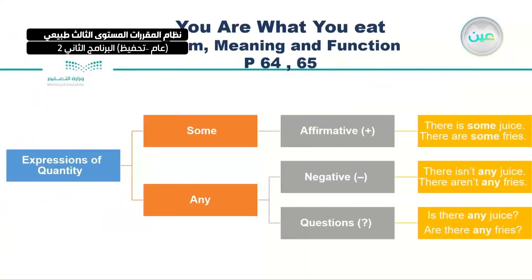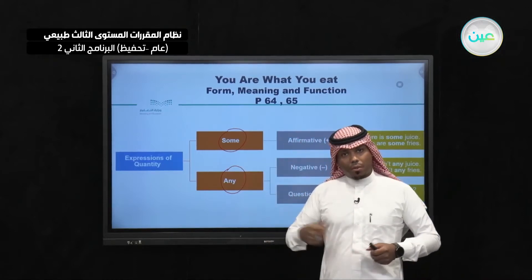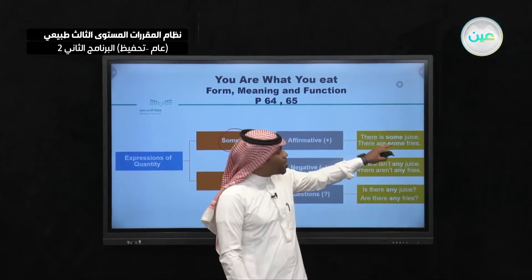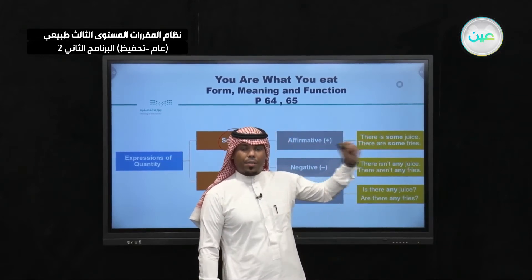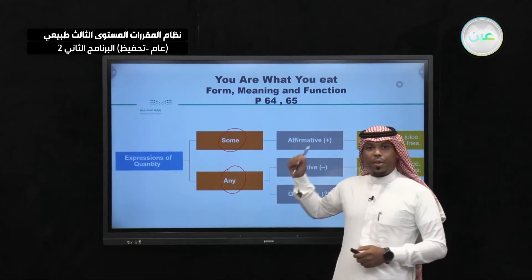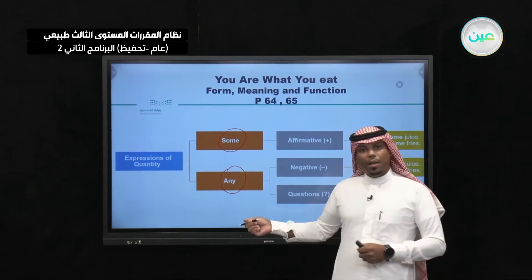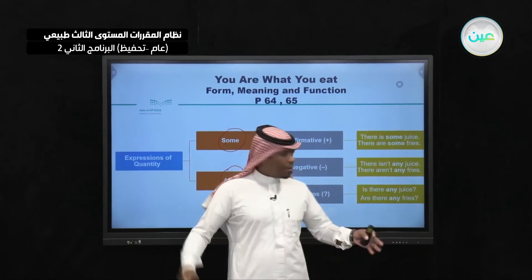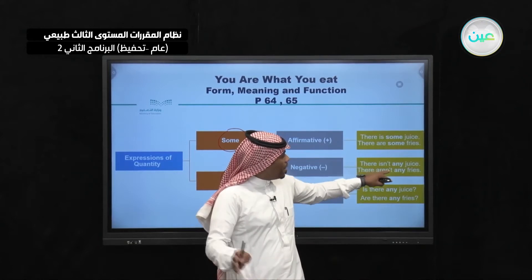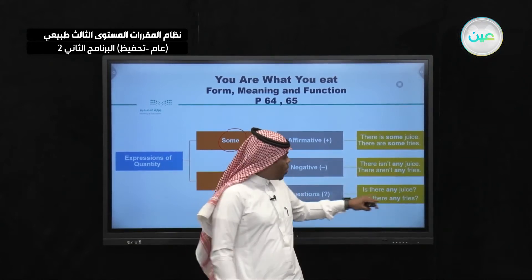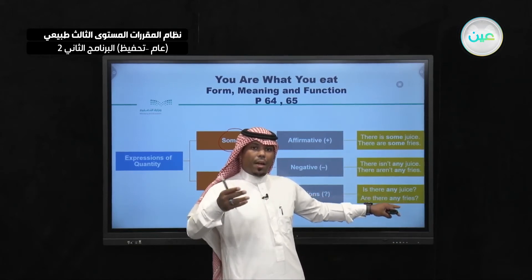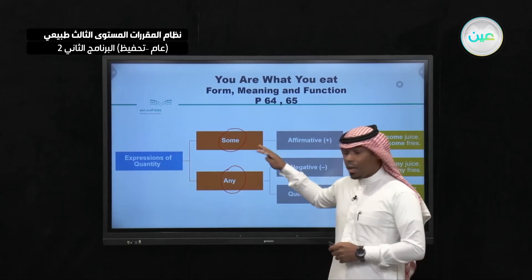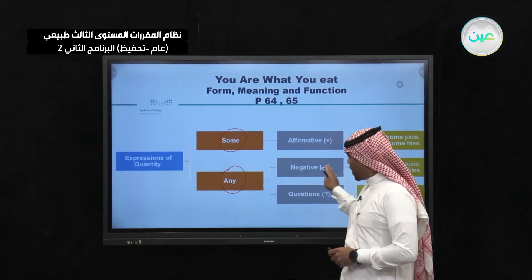What about expressions of quantity? We talked about 'some' and 'any'. We said that 'some' is used in affirmative statements. For example: 'there is some juice', 'there are some fries'. What about 'any'? Any is used in negative sentences and questions. For example: 'we don't have any juice', or 'there aren't any fries'. Also: 'is there any juice?' and 'are there any fries?' So we use 'some' in affirmative statements, and 'any' in negative sentences and questions.